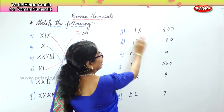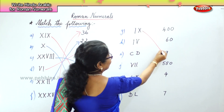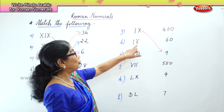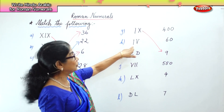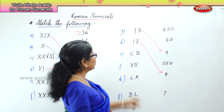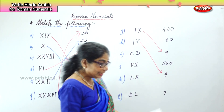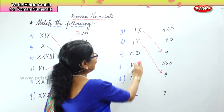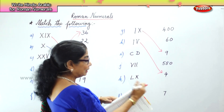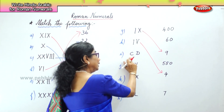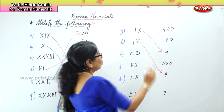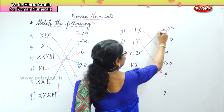Next we have here 9. That is 10 minus 1 equals 9, and here you have 9. Then you have 5 minus 1 is 4, so you have 4 here. Next you have CD. What is CD? D is 500 minus 100, that will be 400. So 400 is here.